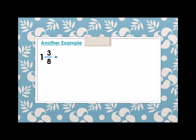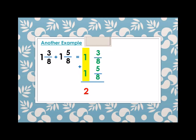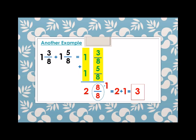Another example using the vertical method: one and three eighths plus one and five eighths. We add the whole numbers: one plus one equals two. Then we add the fractions: three plus five equals eight over eight. But eight over eight is equivalent to one, so two plus one equals three. Therefore, one and three eighths plus one and five eighths equals three.